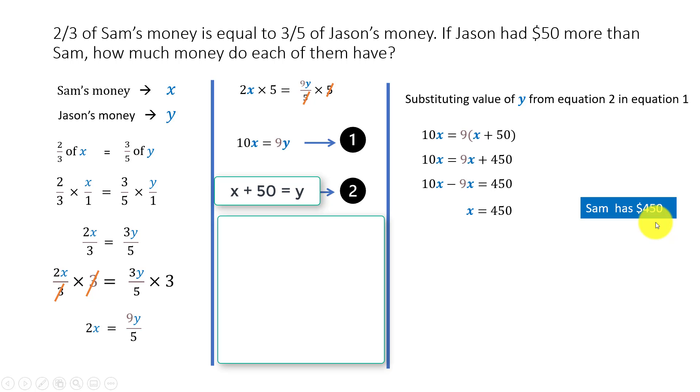Since we know X, we can find out Y. Y is X plus 50, so Y is 450 plus 50. Jason has $500. This is an algebraic method, a way of solving this problem. Hope this was useful.